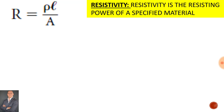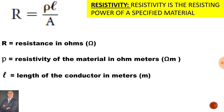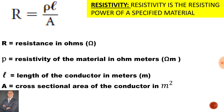For resistivity, it is the resisting power of a specified material. Looking at the function of each component in the formula: R is the resistance in ohms, rho is the resistivity of the material in ohm-metres, l is the length of the conductor in metres, and A is the cross-sectional area in metres squared.